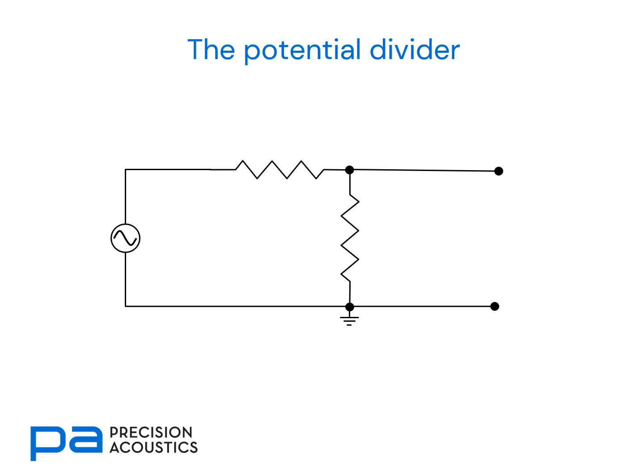Before we can do that, we'll begin by recapping the potential divider. Here we have two impedances, Z1 and Z2, and an input voltage Vin. If we look at the voltage developed across Z2, we find that that is given simply by the equation as shown on screen.